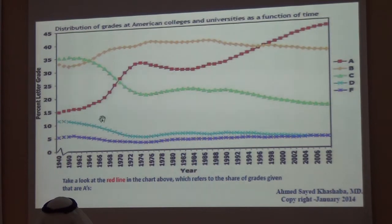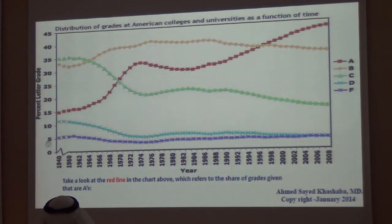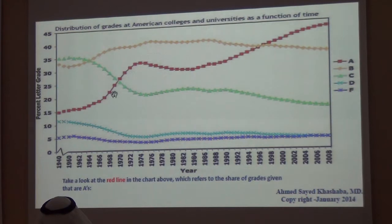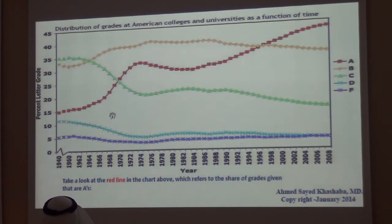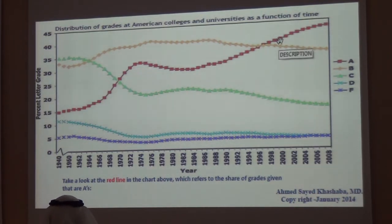If you look at the end of the curve, those students — called in the USA the baby boomers, born in the 1940s and 50s — later became professors. The students of yesterday became the professors of today, and they inherited the attitude of giving high grades from the professors before them.